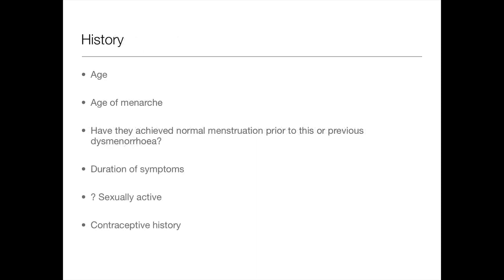For a general history: age is really important — if they're 16 you'd think primary cause; if they're 35, more likely secondary. Ask the age of their menarche, because if a woman is 45 and established menarche very early, she may just be going through the menopause. Ask whether they've ever achieved normal menstruation or if it's always been irregular — that can help with conditions like PCOS, polycystic ovarian syndrome, where there are often derangements in the normal cycle. Also note the duration of symptoms.